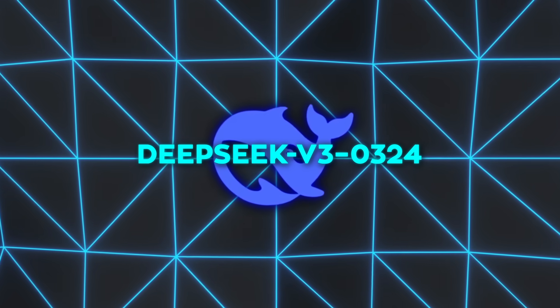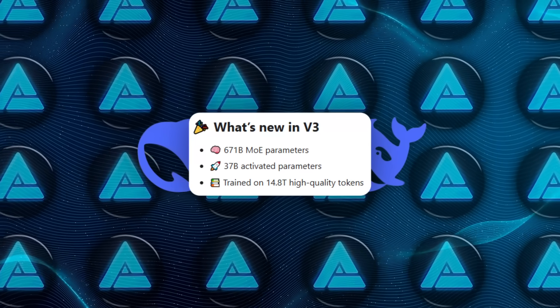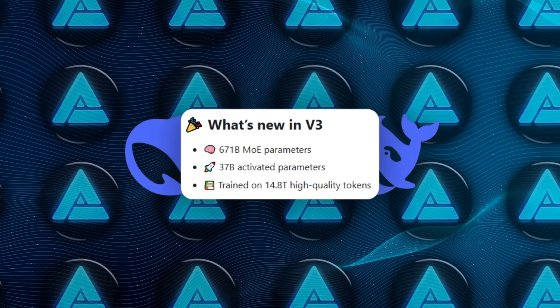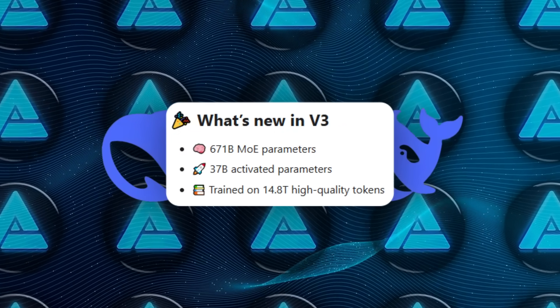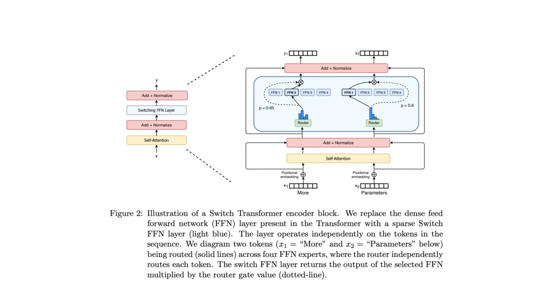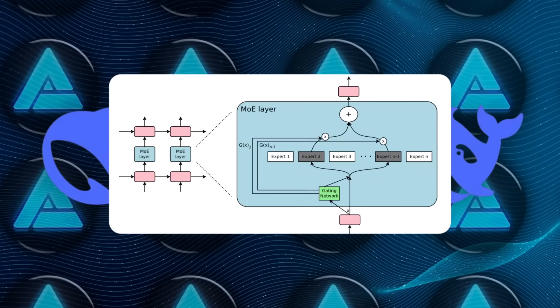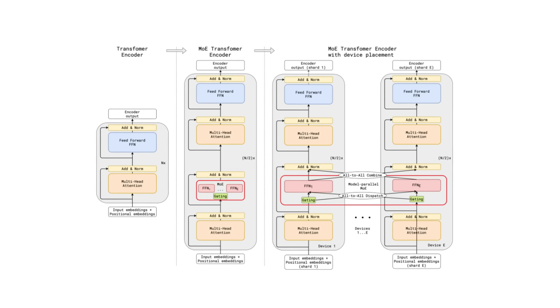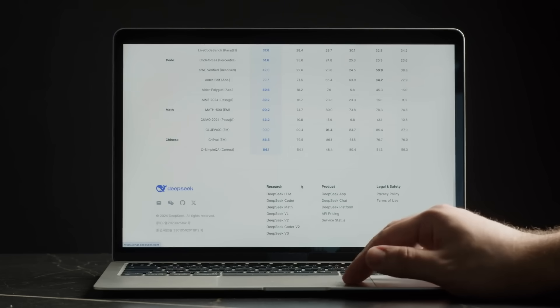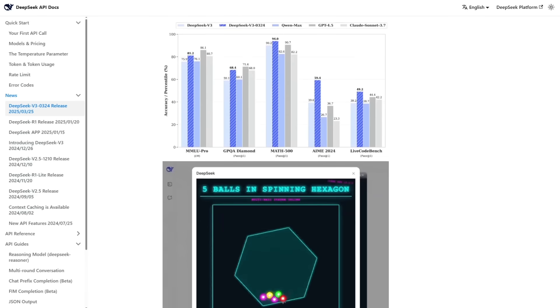V3-0324 also has an approach where it doesn't activate all of its parameters every time it answers a question. Specifically, we're talking about a total capacity of 671 billion parameters, but only about 37 billion of them get used per prompt. It's often referred to as a mixture of experts strategy. Mixture of experts means you don't keep everything dense all the time — instead, you break a model into smaller specialized networks, then only call up the parts you really need for a specific problem. It's less resource intensive than a single giant model handling everything, and that's partly how DeepSeek is able to keep inference costs down.